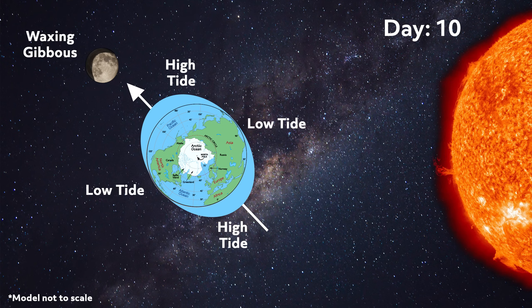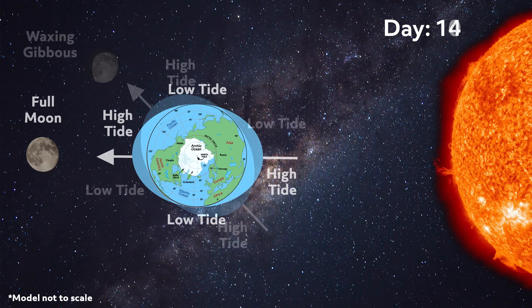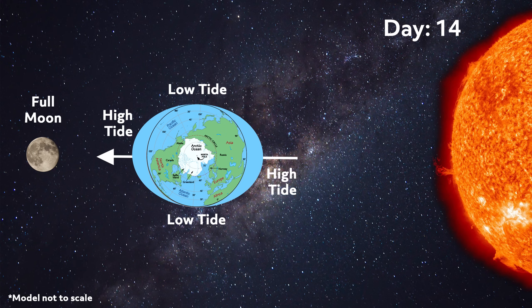The moon continues to orbit the Earth. About seven more days after first quarter, it reaches full moon. At this point, the Sun, Earth, and moon are lined up again, creating another spring tide.